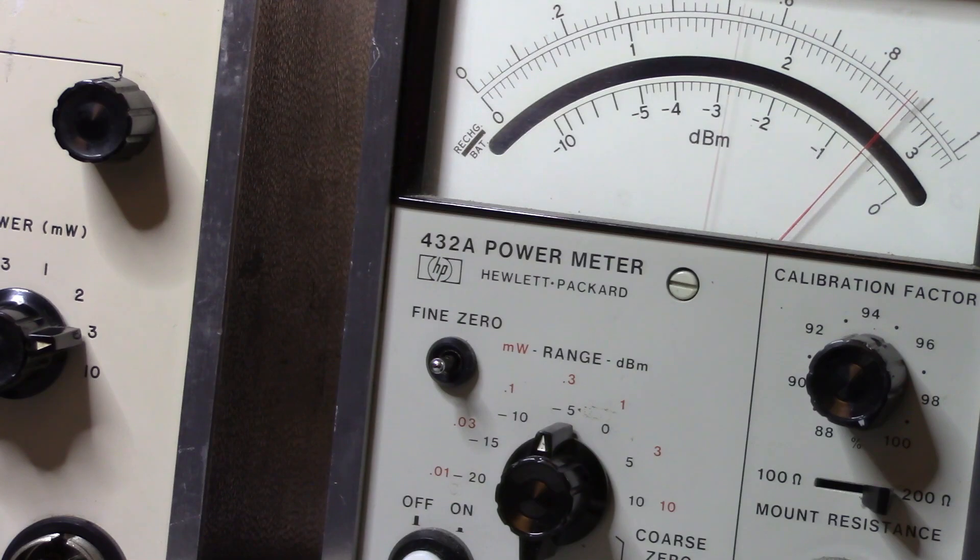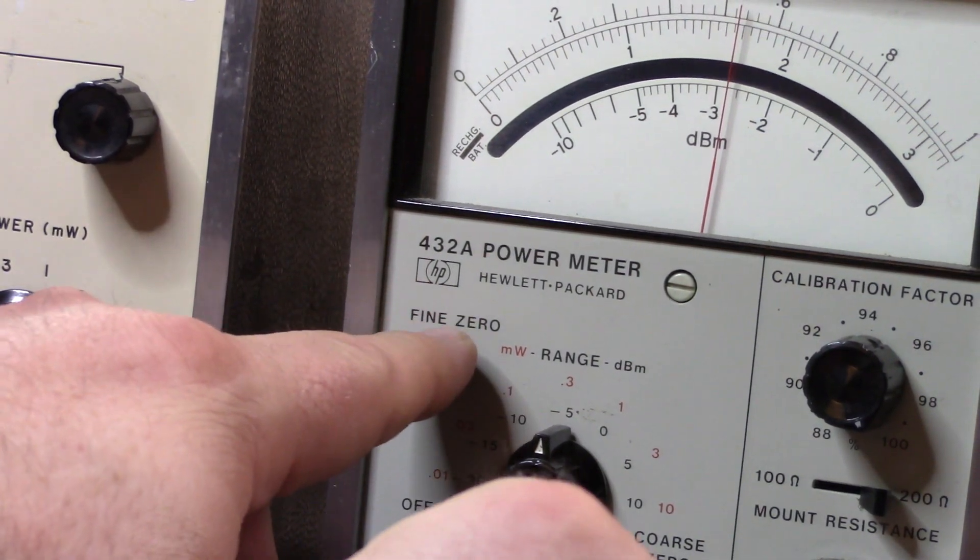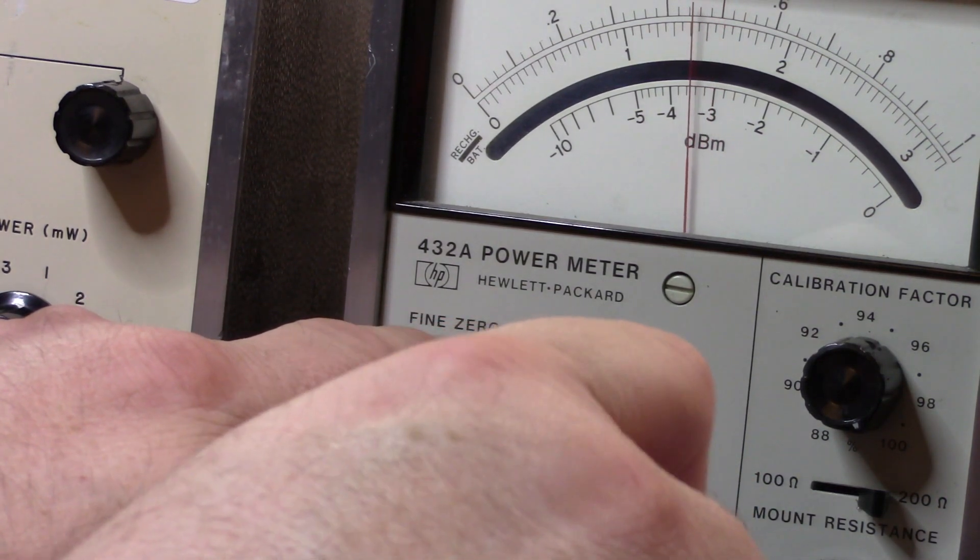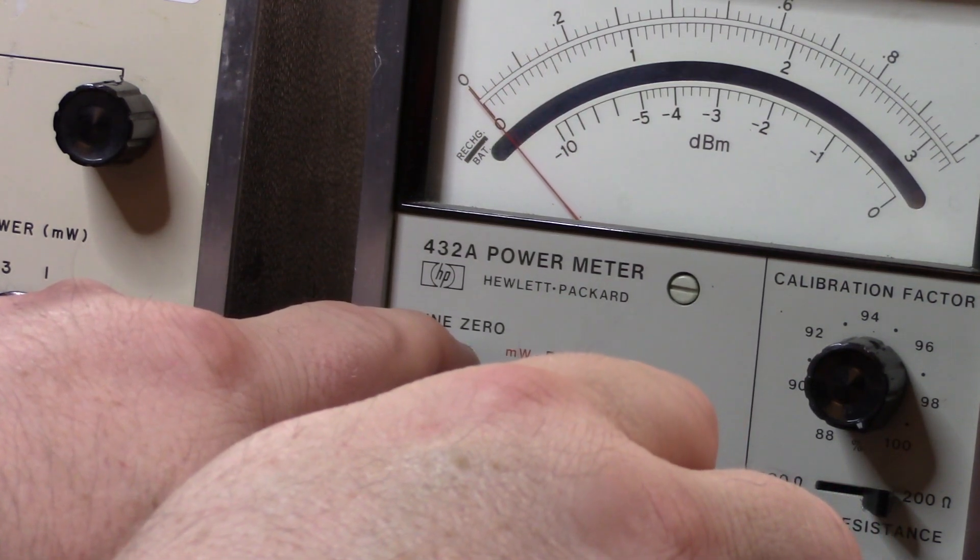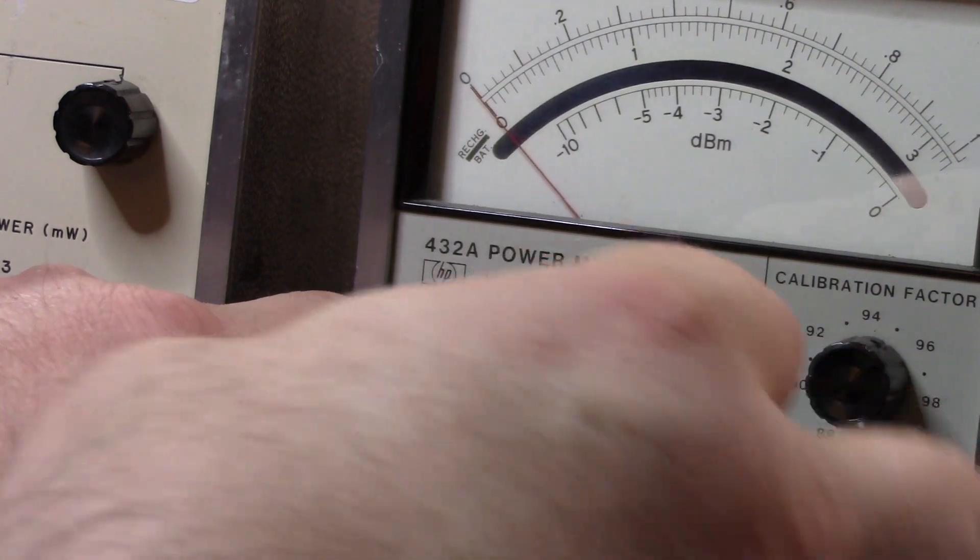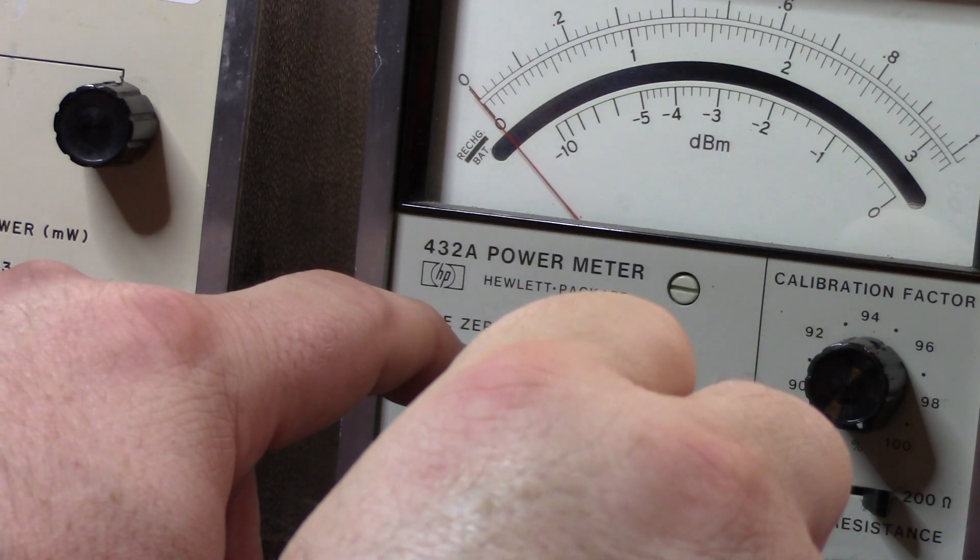We plug that in. Mount resistance set corresponding. Now we're going to depress find zero and then we're going to turn counterclockwise until the meter will no longer zero.